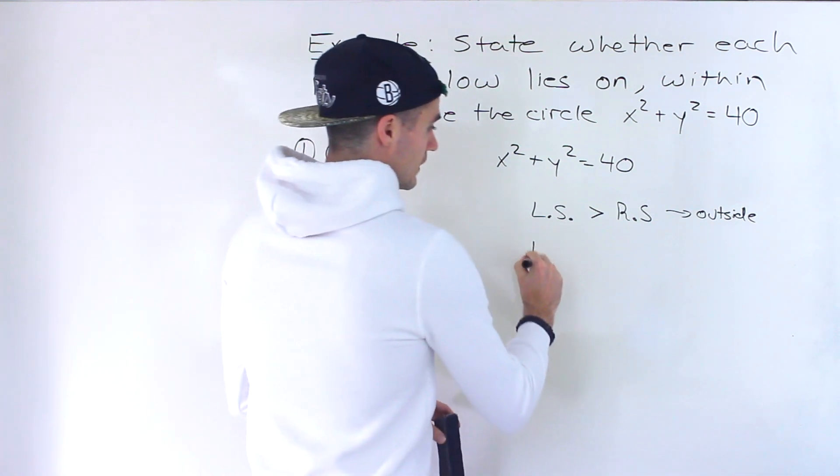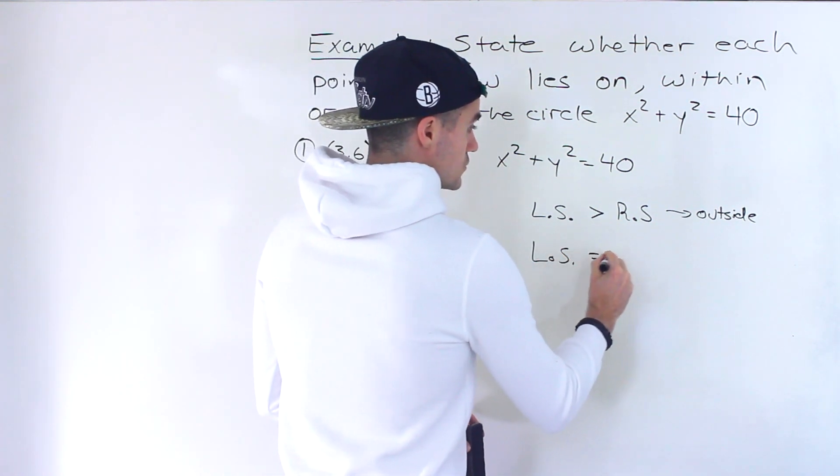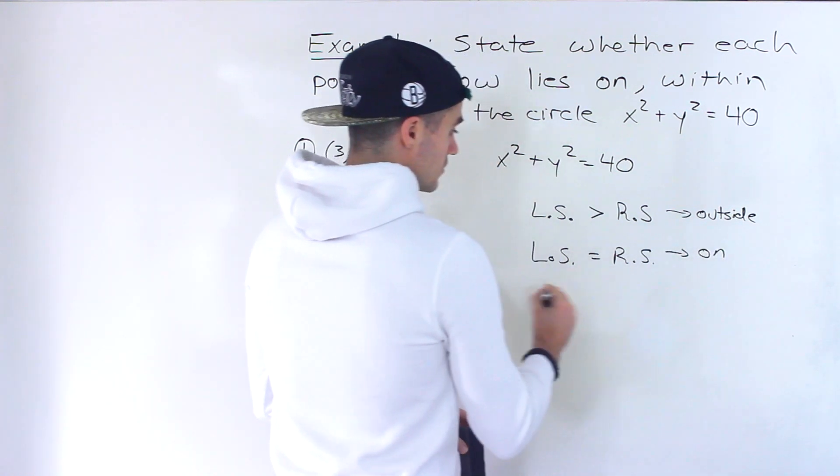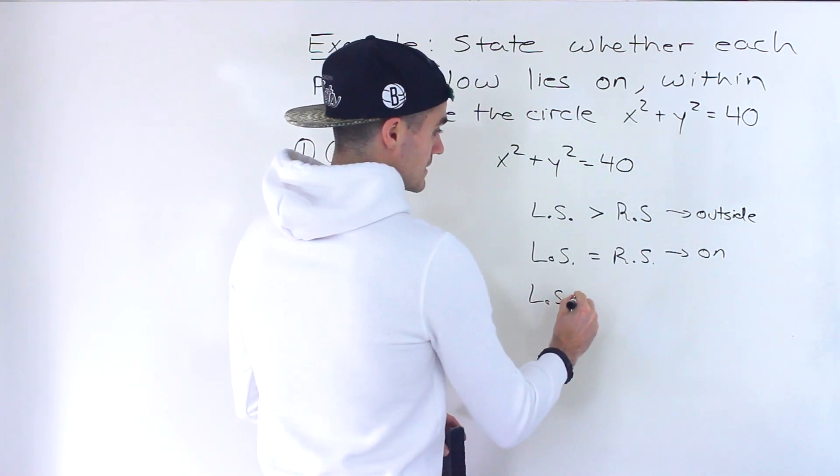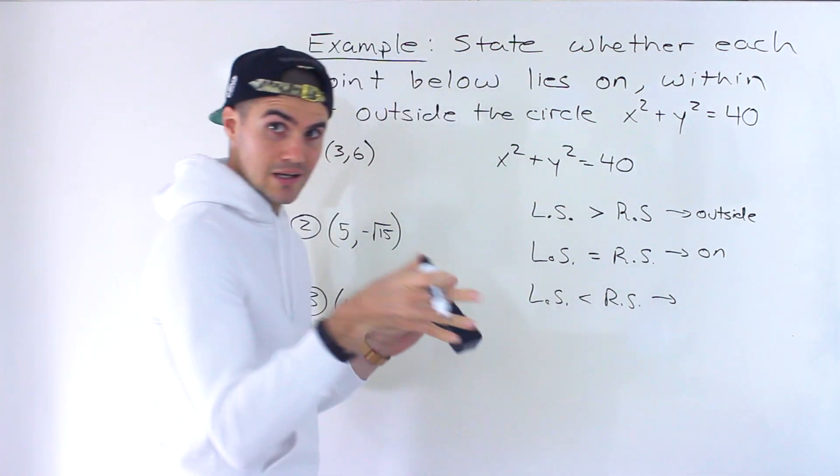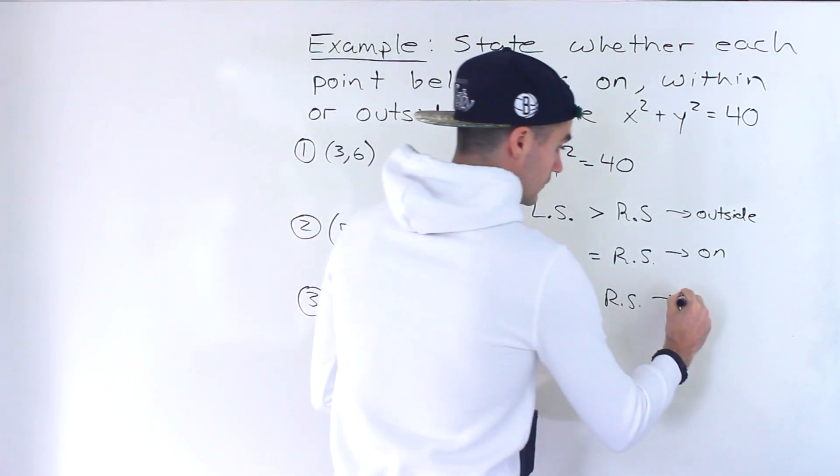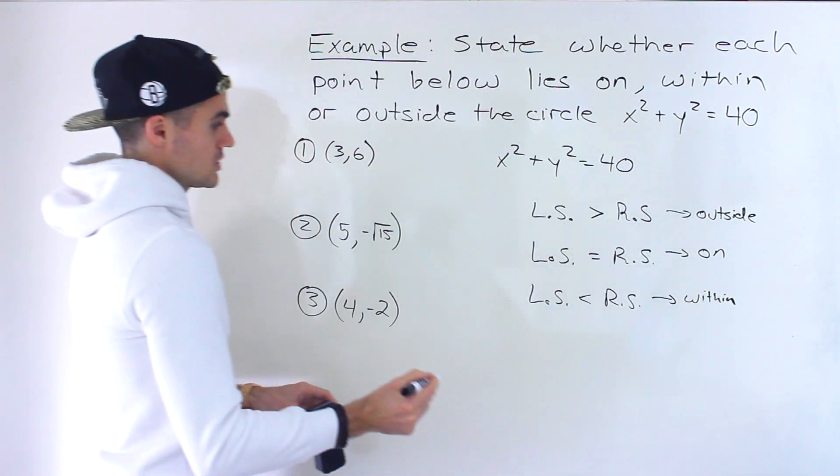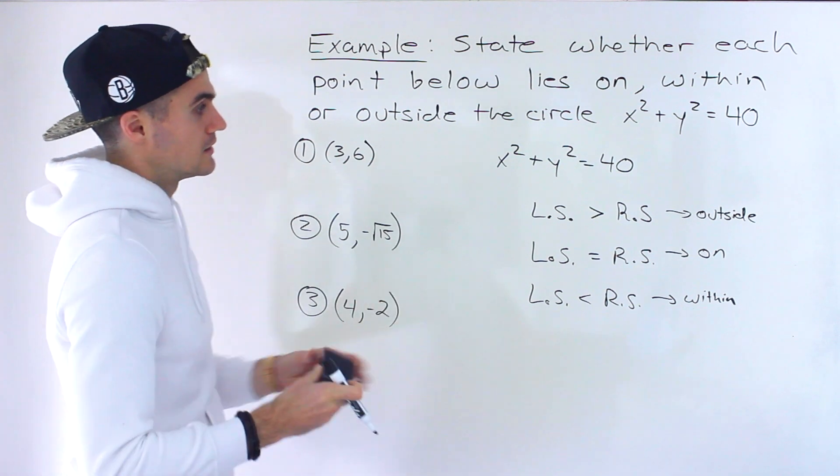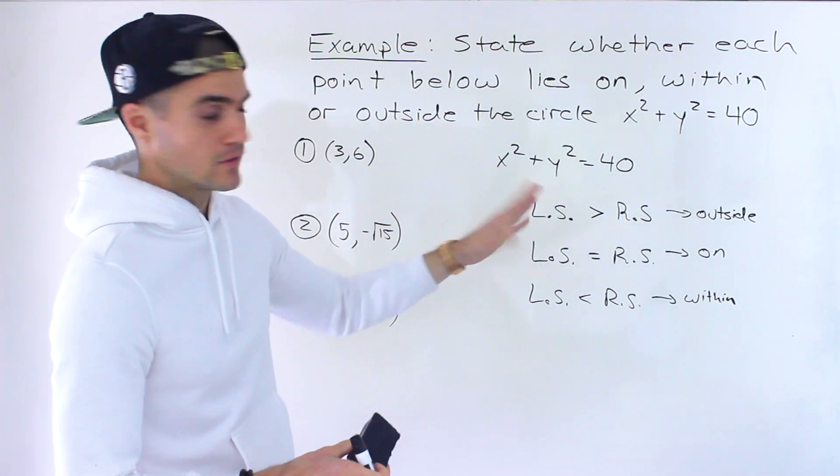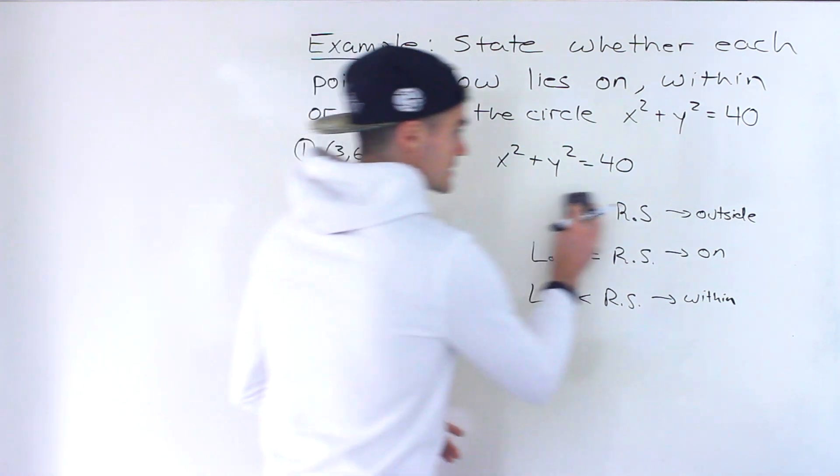If the left side is equal to the right side then it means that the point is on the circle, and if the left side is less than the right side then it means that the point is within the circle. That's pretty much it. You want to plug in these points for x and y and then see how the left side relates to the right side.